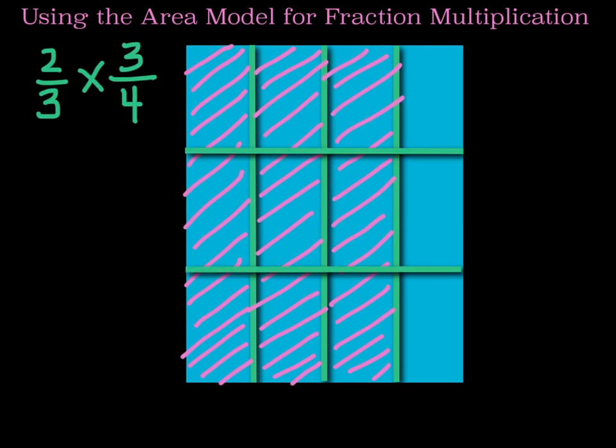Our next step will be to shade two-thirds. It will look like this. You will once again notice that there are certain boxes in this rectangle that have been shaded more than once.